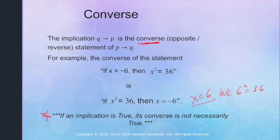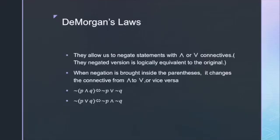DeMorgan's laws allow us to negate statements with and or or connectives. The negated version is logically equivalent to the original. When negation is brought inside parentheses, it changes and to or, or vice versa — similar to how multiplying an inequality by a negative flips the sign.